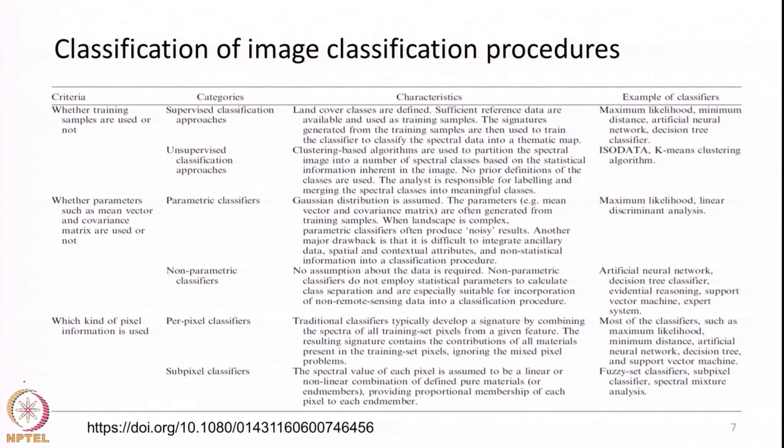There are a wide variety of algorithms and methods available to do land use land cover classification. We will broadly see how the different algorithms for LULC mapping can be categorized — we will not go into algorithmic details, but we will see what different classes of algorithms exist for basic knowledge. First: whether we are going to provide training samples to the computer or not — that is the first major category of classification.